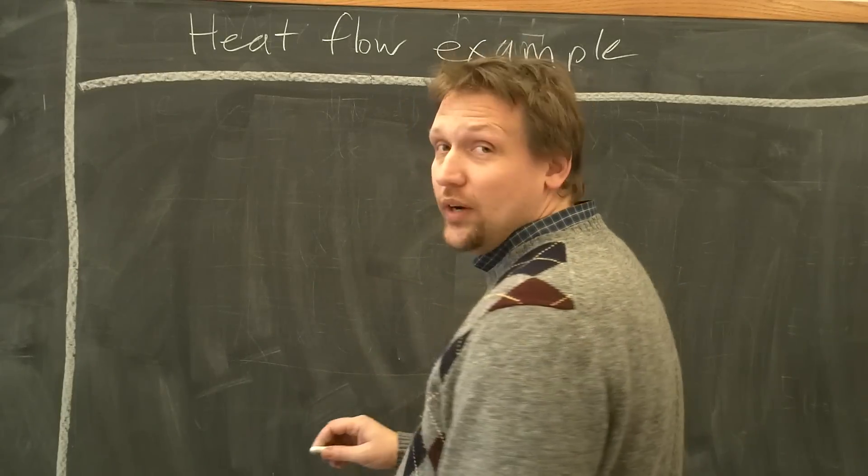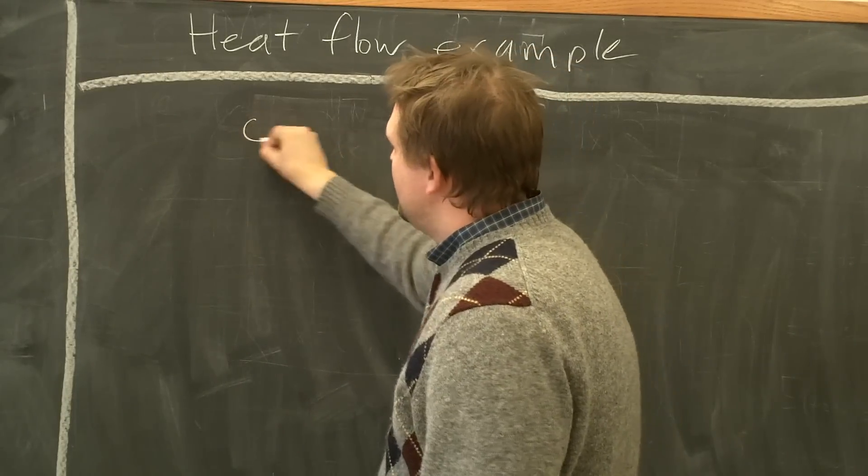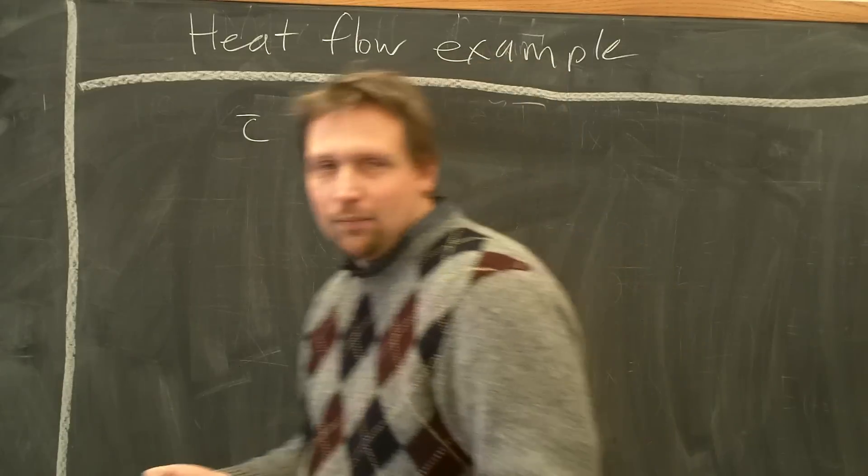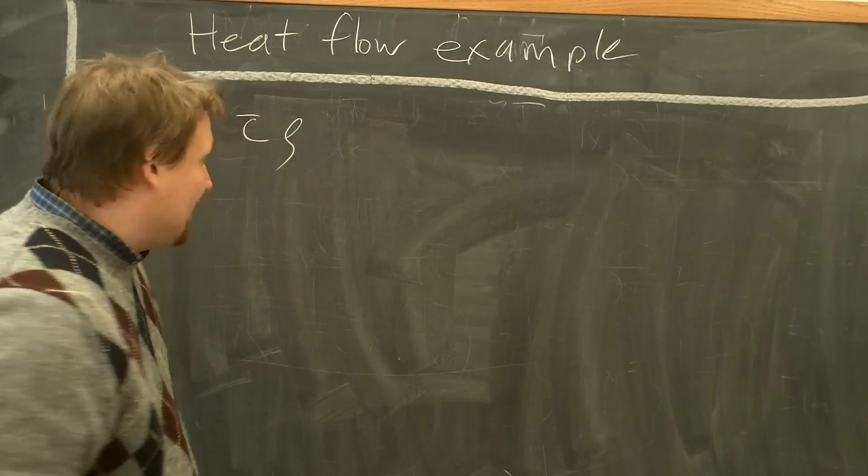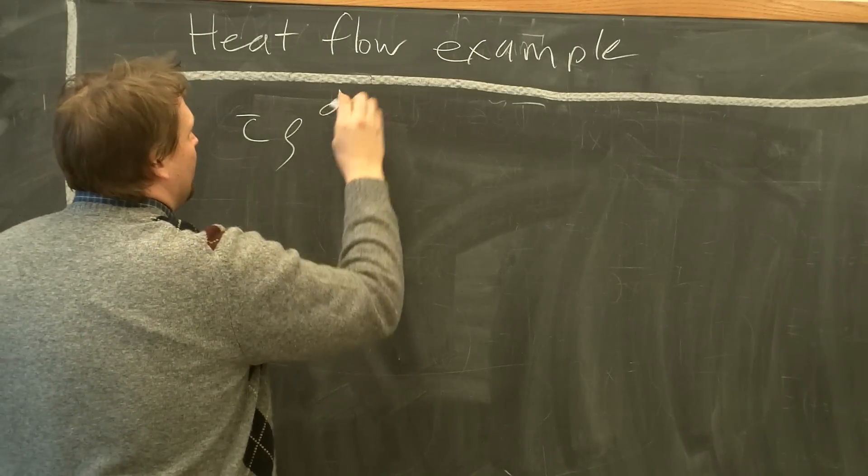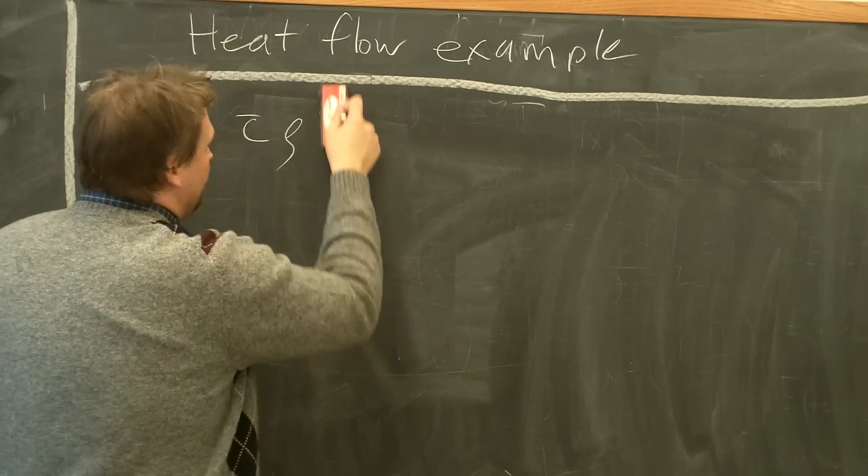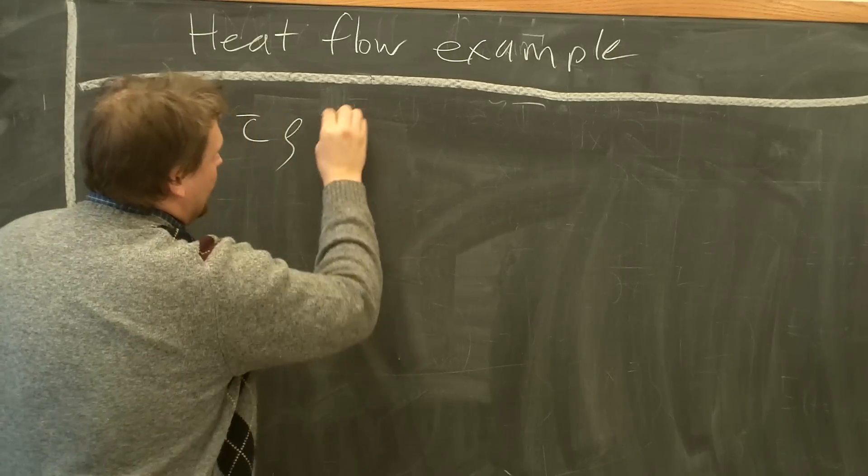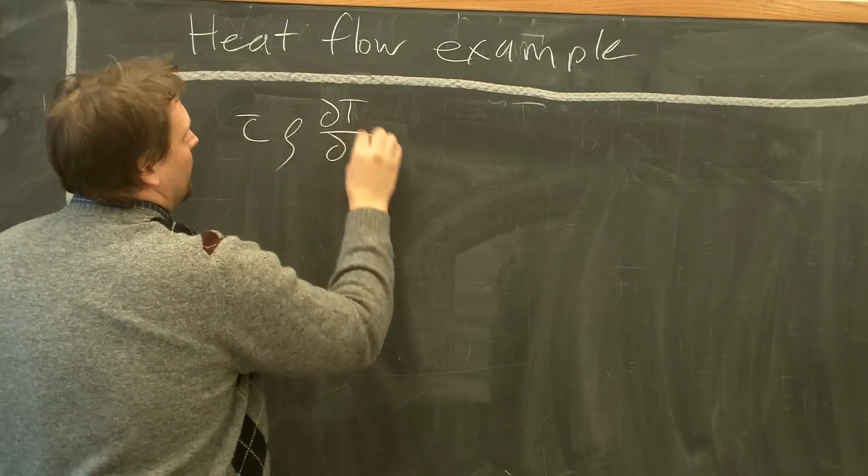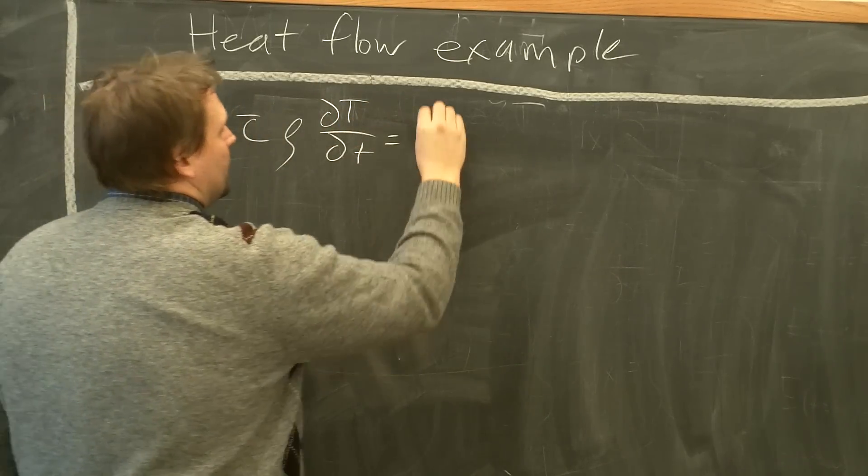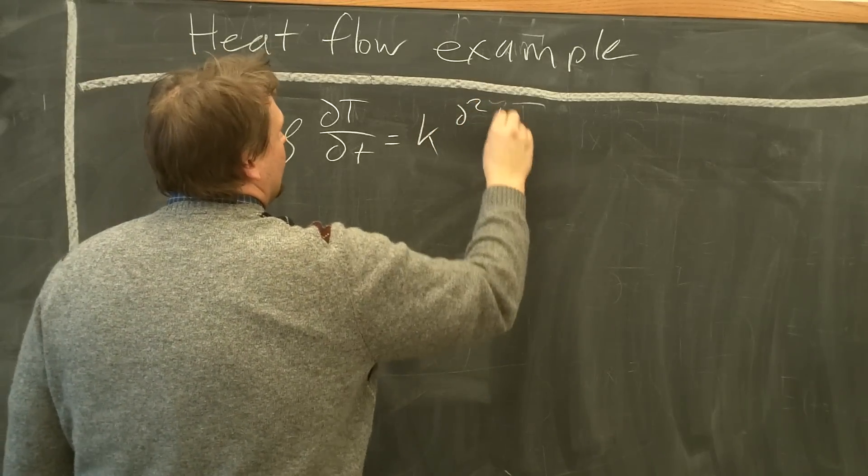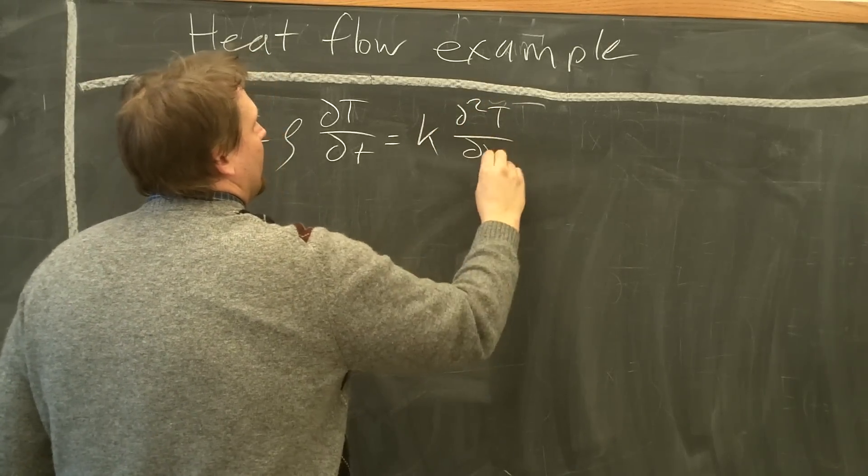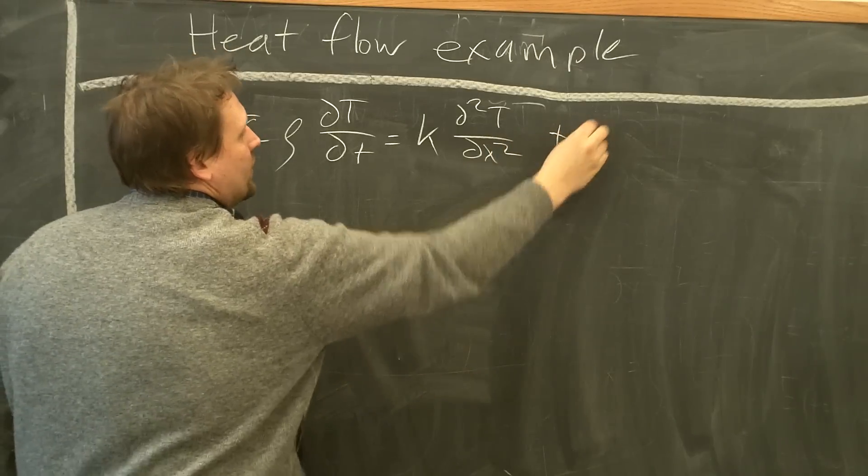So let's start with the heat equation for this example. C bar, constant heat capacity, times the density, which will be a constant in this example as well, times the time derivative, the partial derivative of temperature with respect to time, partial T partial time, equals thermal conductivity, partial squared temperature, or partial X squared, plus Q here.